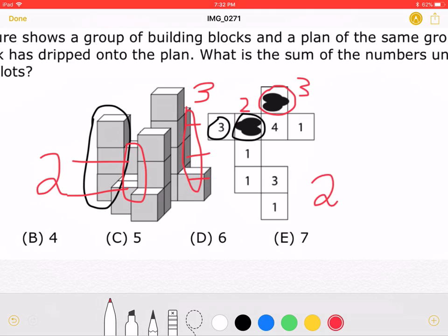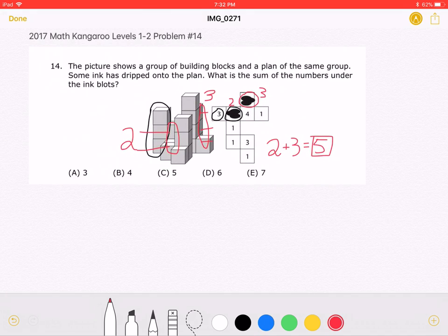If we add 2 plus 3 together, we will get a total of 5. That means that the answer must be answer choice C.